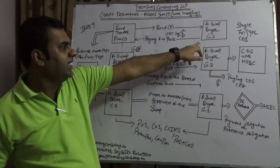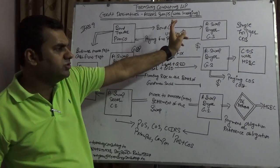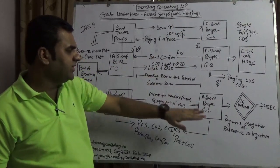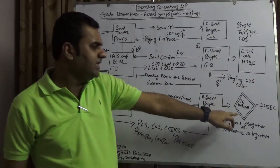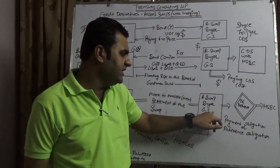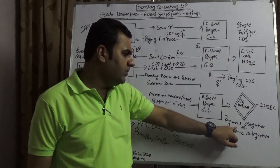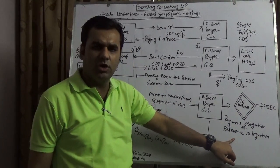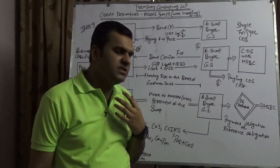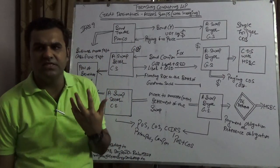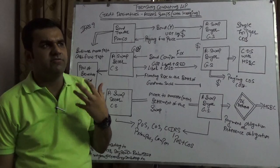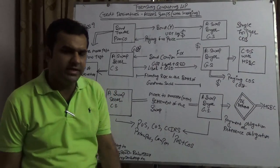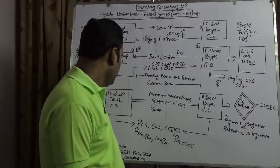If default doesn't happen, the asset swap continues to generate either fixed or floating payments. If default happens, then as per the agreement between GS and HSBC, it could be payment obligation (in dollar terms) or reference obligation (in the form of notes or government securities).